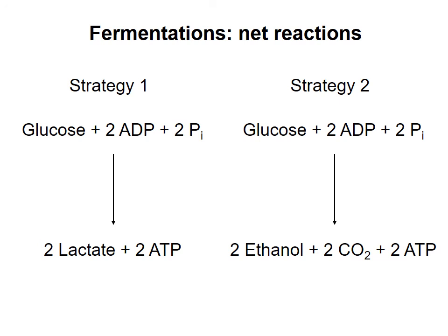Fermentations produce ATP without net oxidation of the starting materials, and are a way to make ATP under anaerobic conditions when molecular oxygen is not present. In the next video, I'll describe how cells make glucose in the process of gluconeogenesis.